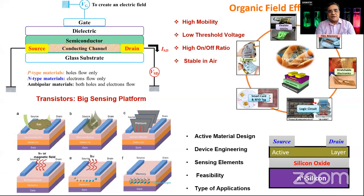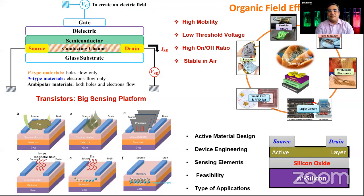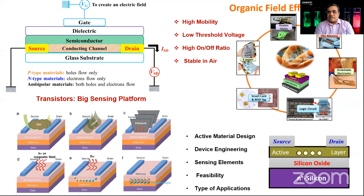Looking particularly at the transistor area, there are different applications and depending on the type, we can design materials. A transistor can be useful for memory devices, light-emitting transistors where light emission occurs in the channel semiconductor, and also as a circuit for electronic paper, RFID cards, or logic circuits combining P-type and N-type transistors. The transistor operates by applying gate voltage between source and drain to generate the channel conductor — it is essentially a switch. Depending on the gate bias, we can have either holes or electrons as the majority charge carrier, or ambipolar behavior where the same device injects and transports both holes and electrons simultaneously.